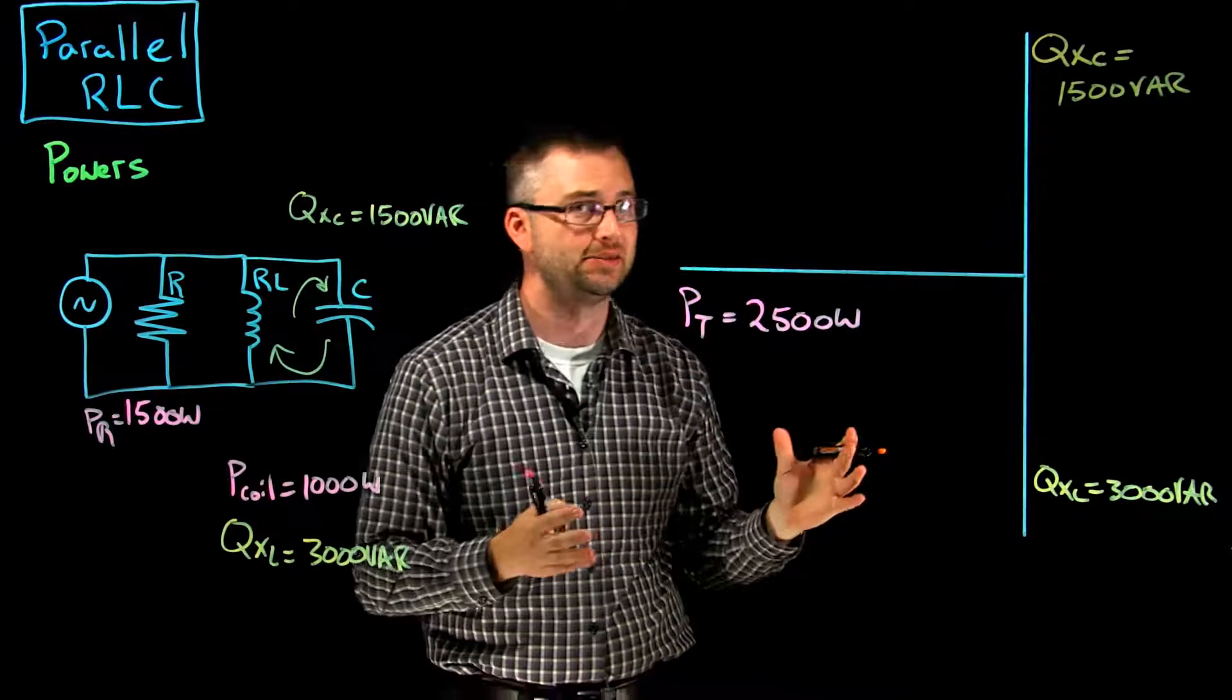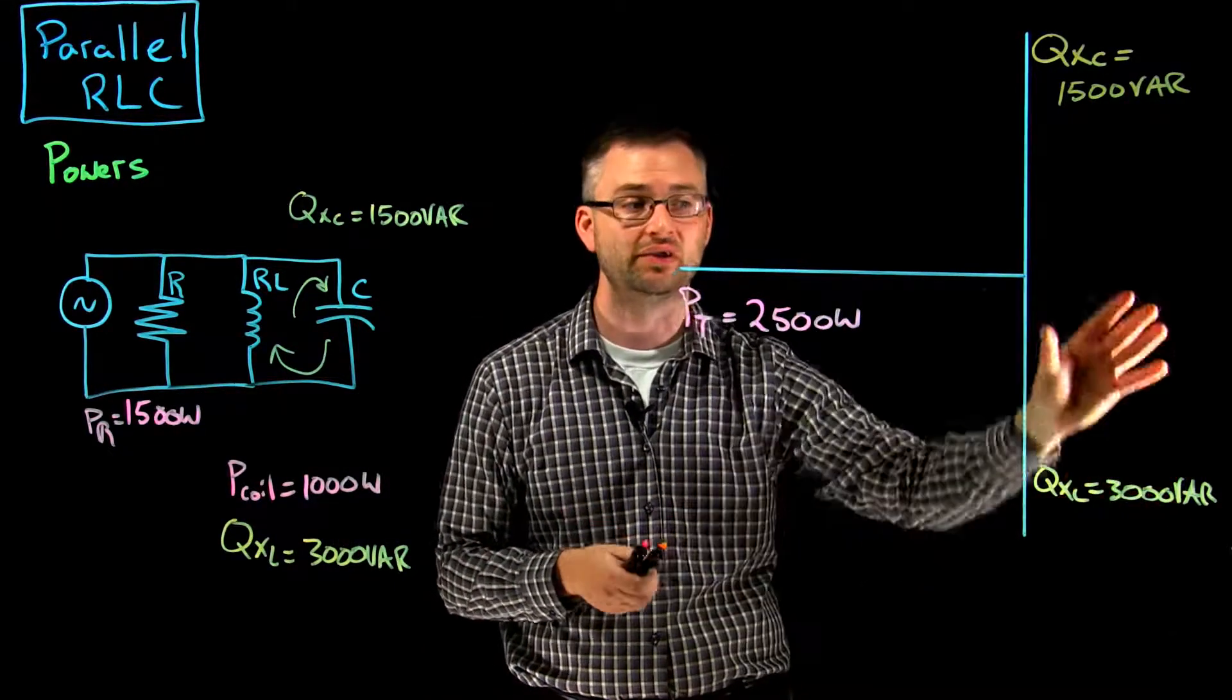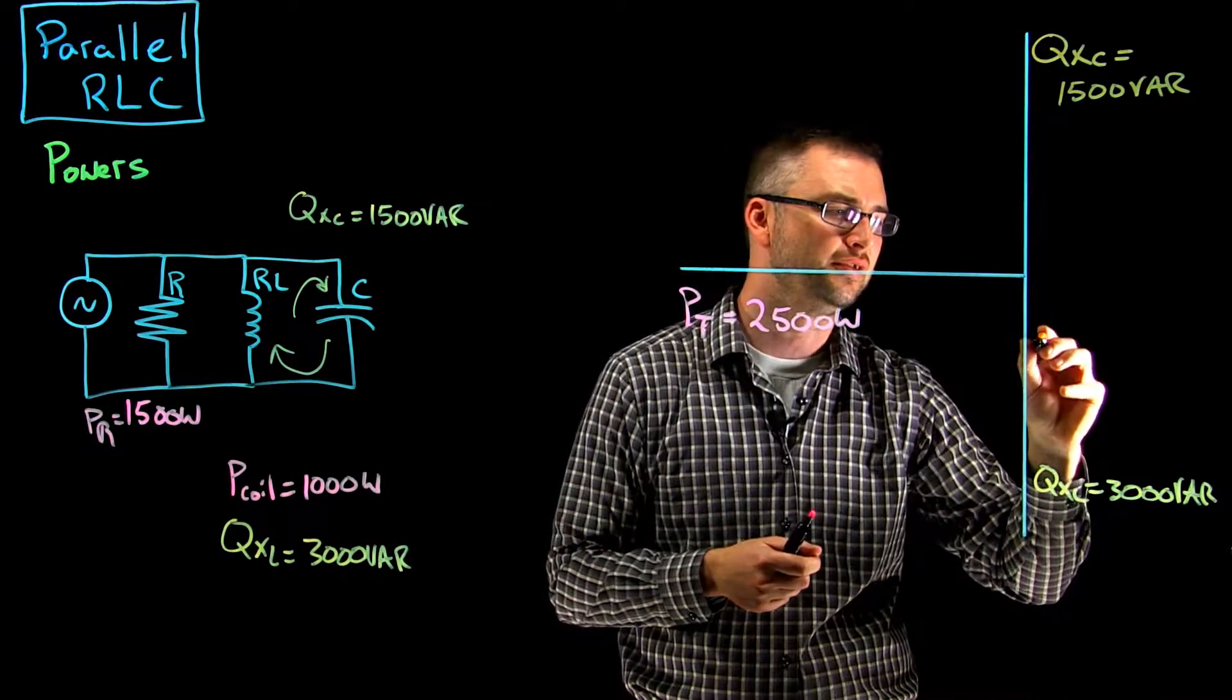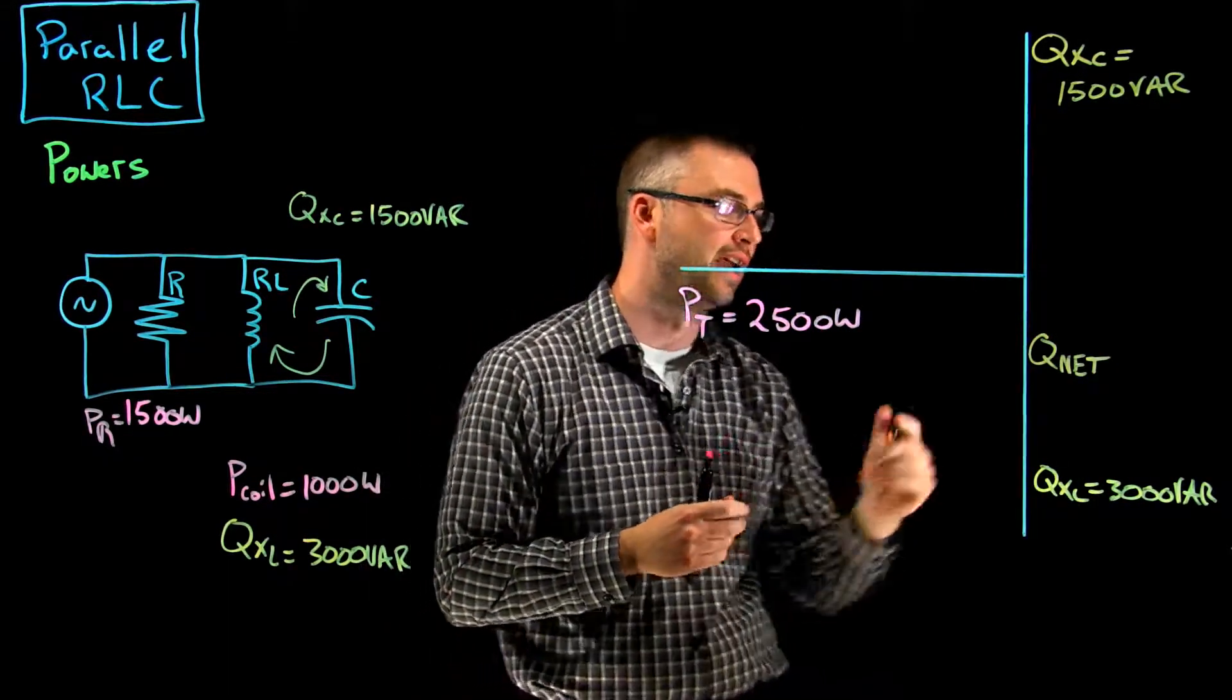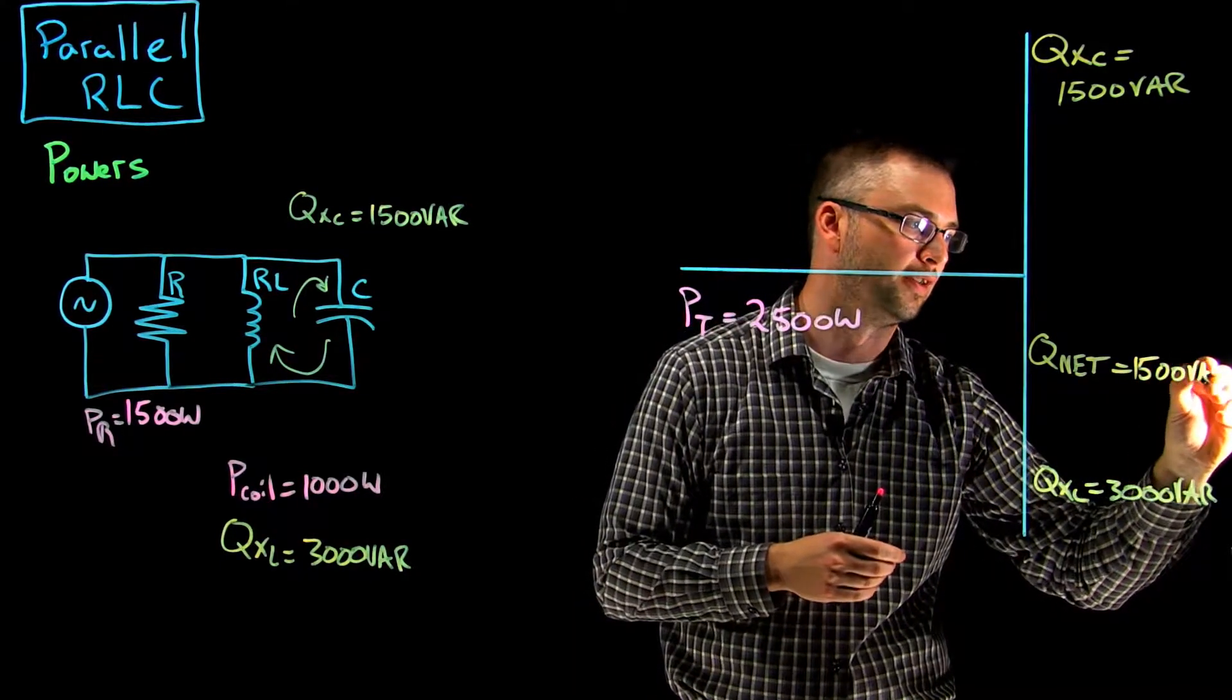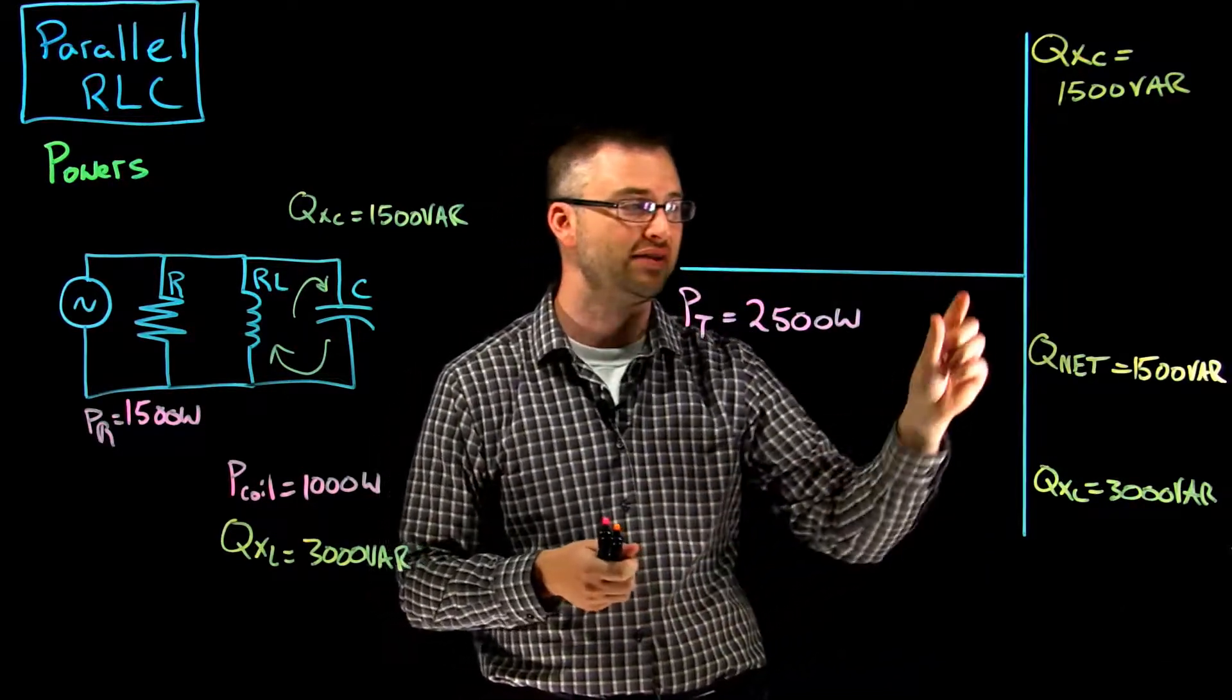Now when we add them together, they sort of cancel each other out. So 1500 VArs is going to be taken off of our 3000 VArs, and we're going to be left with a net value or a Q net. In this case it's overall more inductive, we have more lagging VArs, and it's going to be 1500 VArs in that circuit. So 3000 minus 1500, we're left with 1500 there. That is our net value.